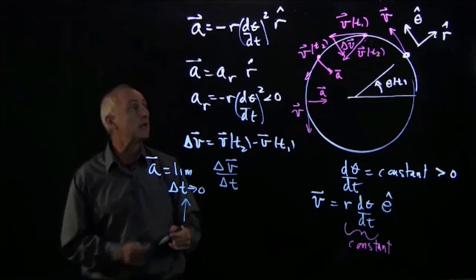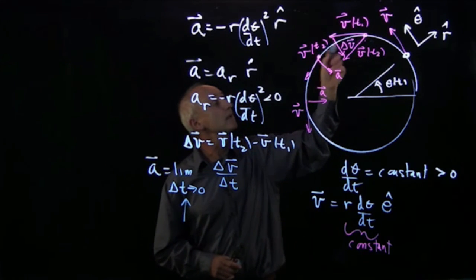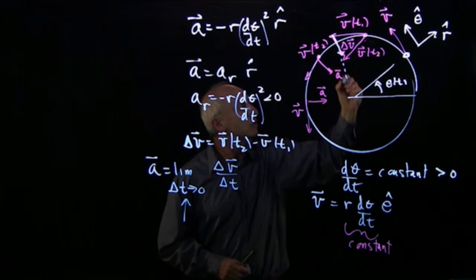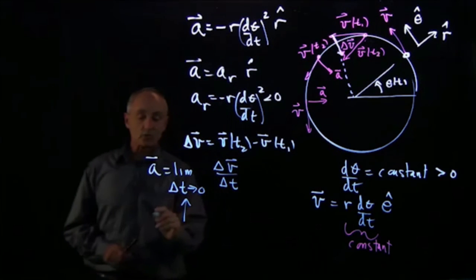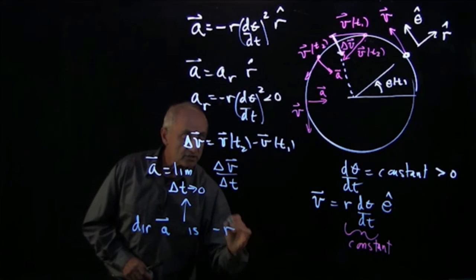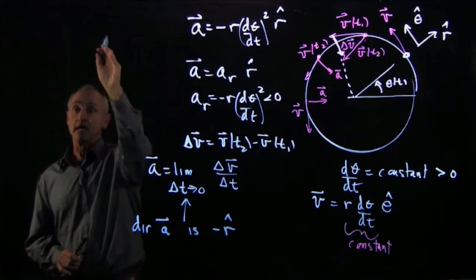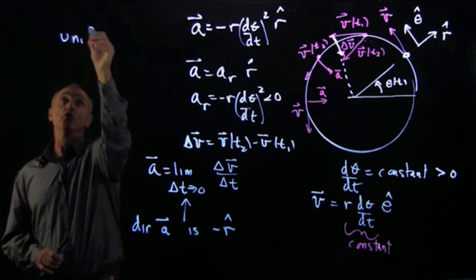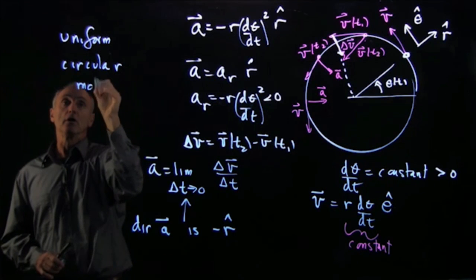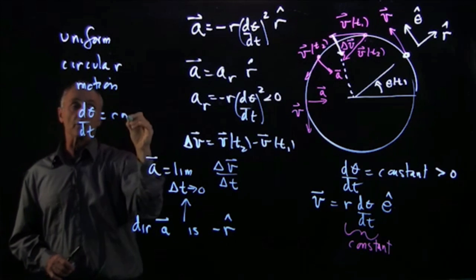And so when we look at this limit, as we shrink down our time interval between t2 and t1, then this vector will point towards the center of the circle. And that's why the direction of a is in the minus r hat direction. Again, let's just recall that this is the case for what we called uniform circular motion, which is defined by the condition that dθ/dt is a constant.